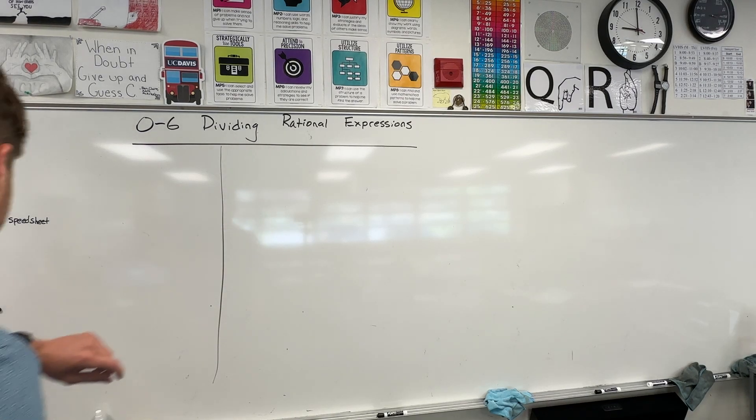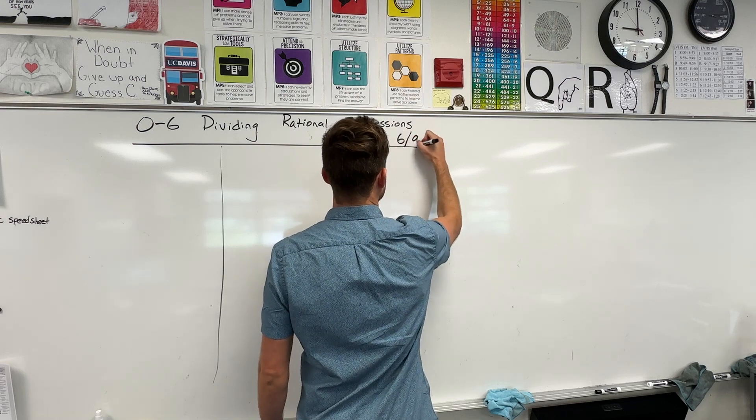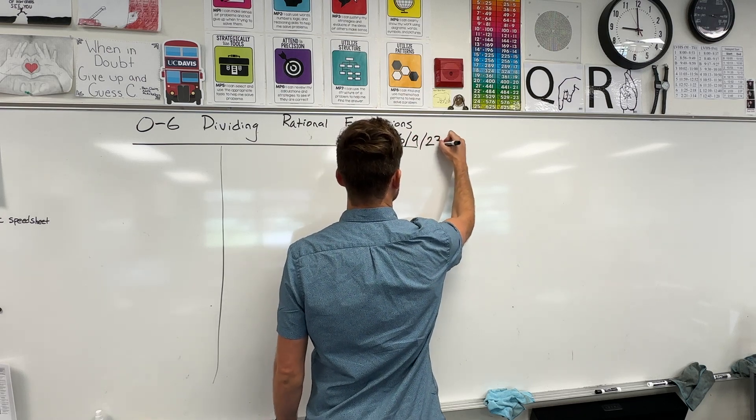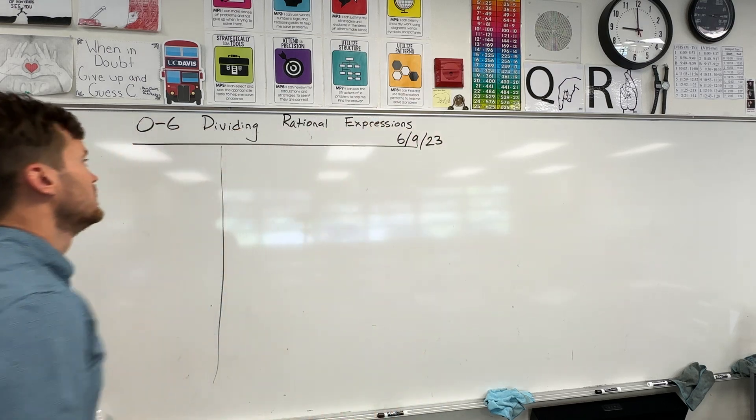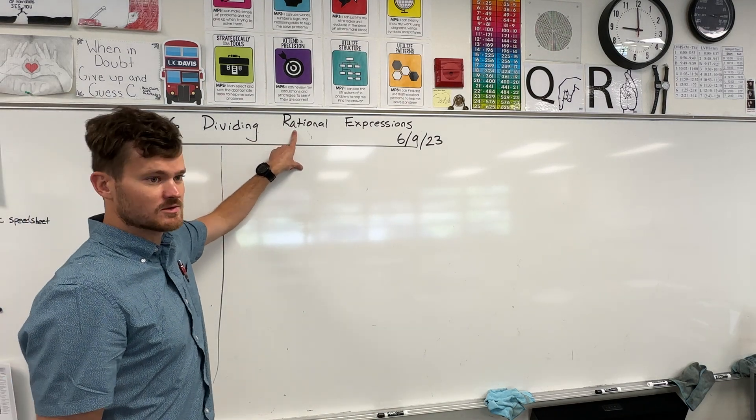All right, we are in Algebra 1. Today's date is the 6th of September of the year 2023. All right, remind me. What does that word mean? Rational.